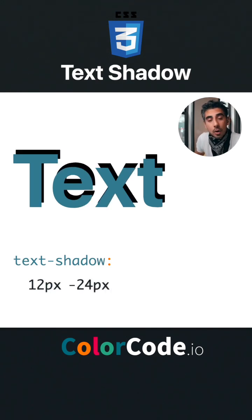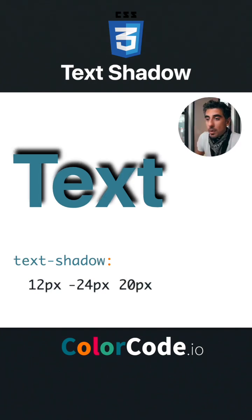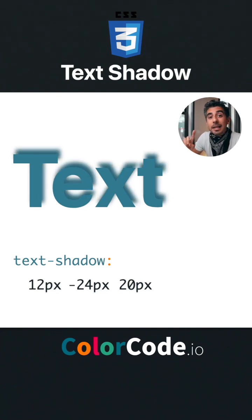Then the blur amount — the higher, the blurrier. Say 20 pixels. Now I cheated. You on your machine will notice that the shadow's the same color as the text, like that.